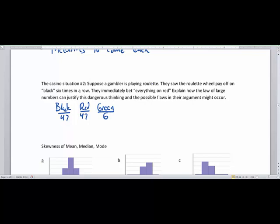Now what happens is that they've been watching this roulette wheel pay off on black six times in a row. They immediately bet everything on red. Now let's explain how the law of large numbers can justify this dangerous thinking and possible flaws in their argument.